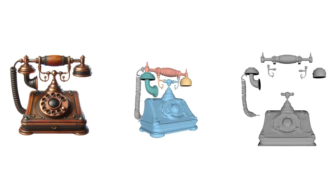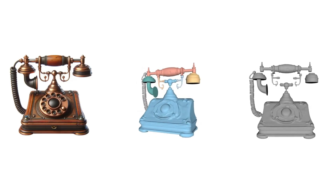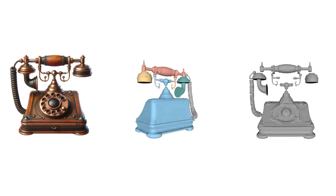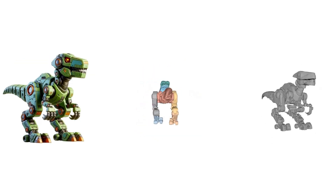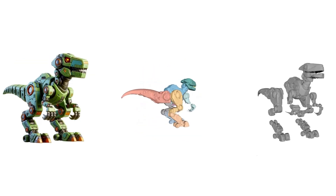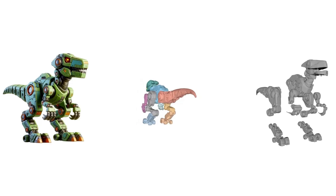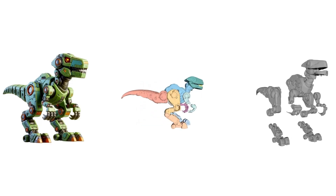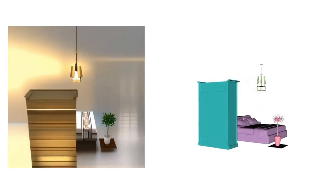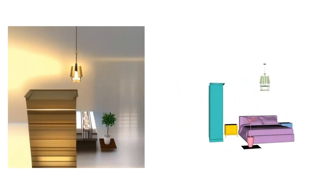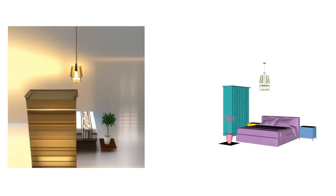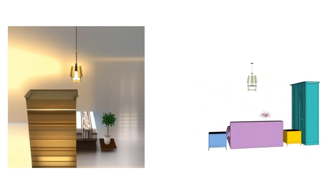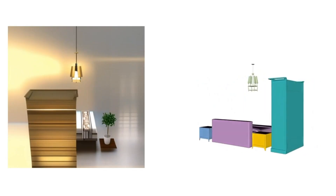No segmentation required. No two-stage pipeline. From one image, it generates multiple separate 3D meshes, each semantically meaningful and geometrically distinct. Think legs, wheels, handles, props — all editable.